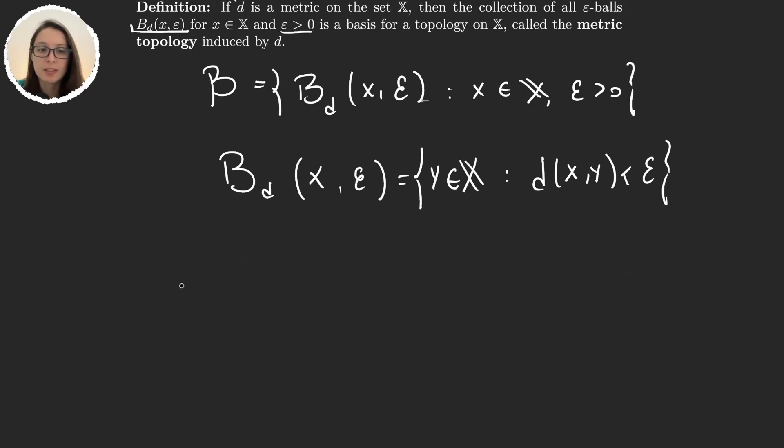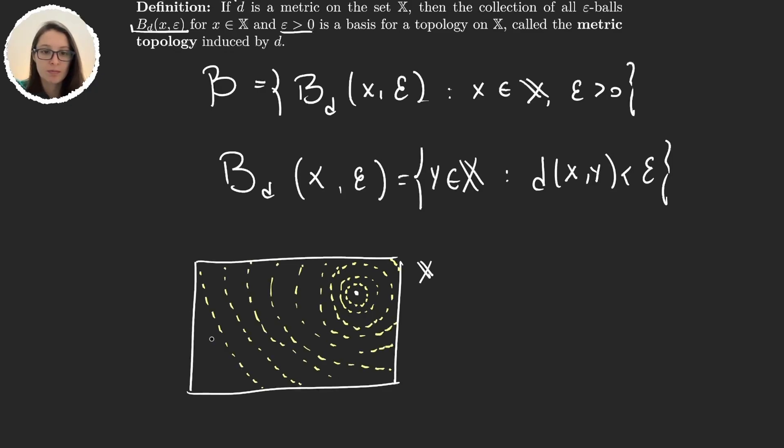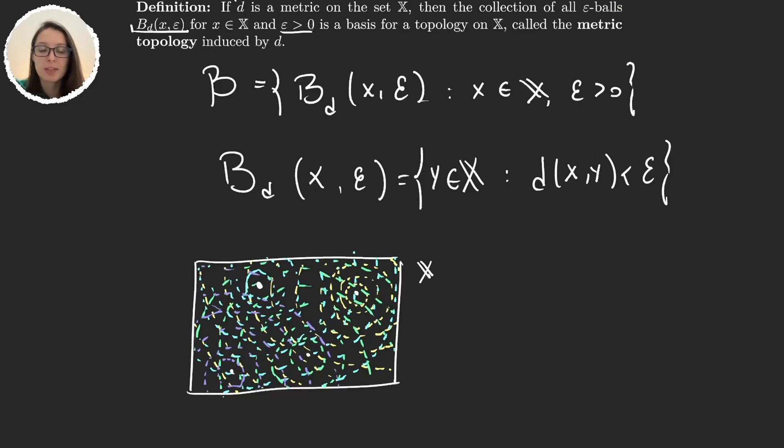So the idea is, if this is our space, then every time I grab x in X, I will consider all the balls centered in this element with all possible radiuses. And I will do this for each element in my space. So you can imagine how big this space is. This is just a basis. Now for the topology, we would have to take any finite intersection and arbitrary unions of elements in these spaces. Metric topologies are huge.